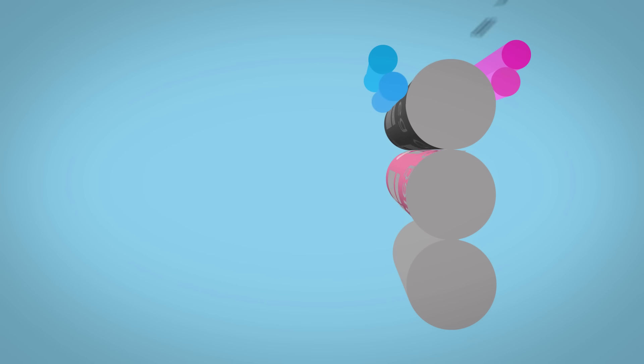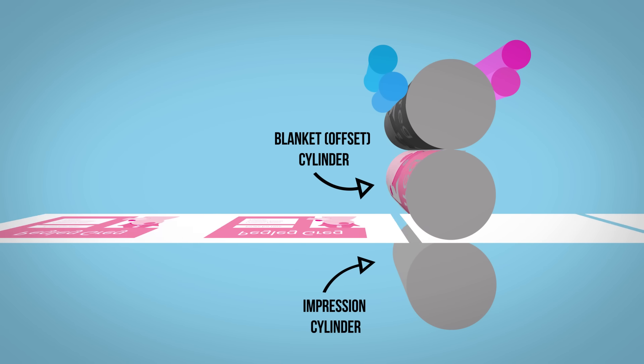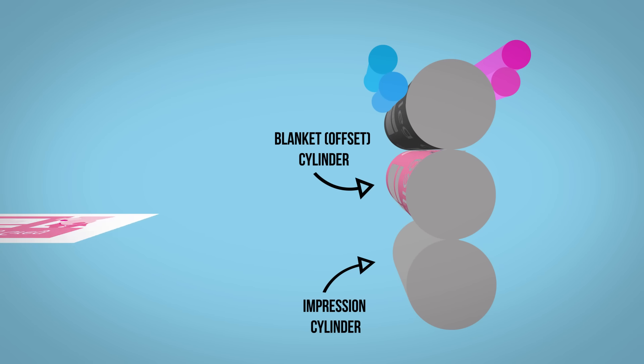The paper is passed between the blanket cylinder and the impression cylinder, where it receives the printed image before it's passed on to the next unit to receive the next color.